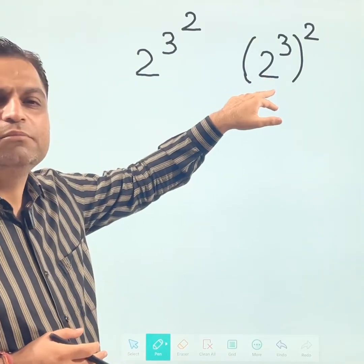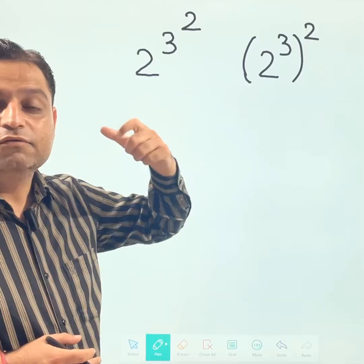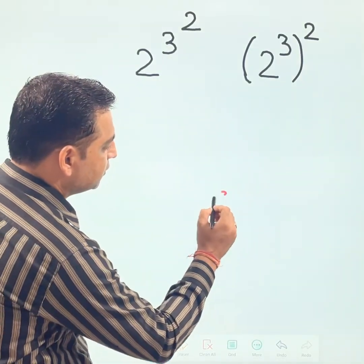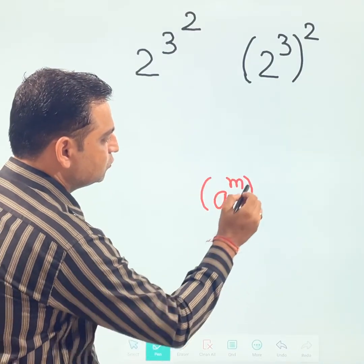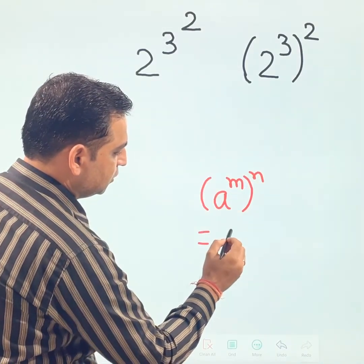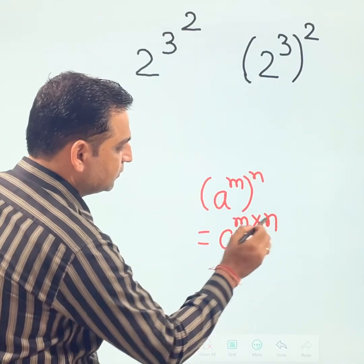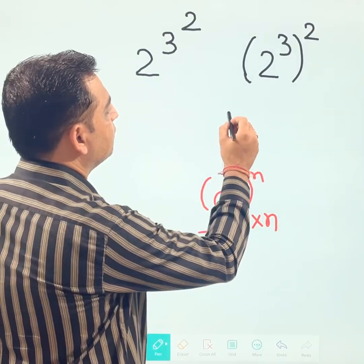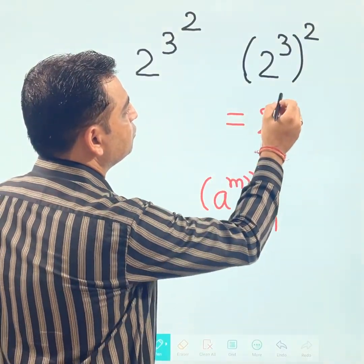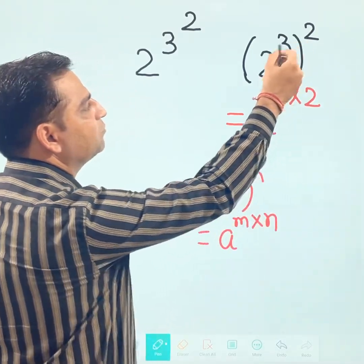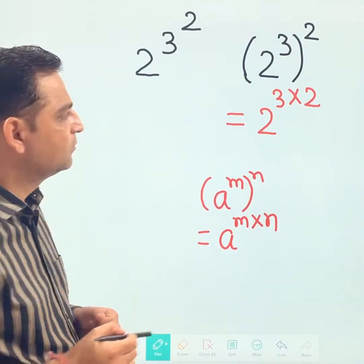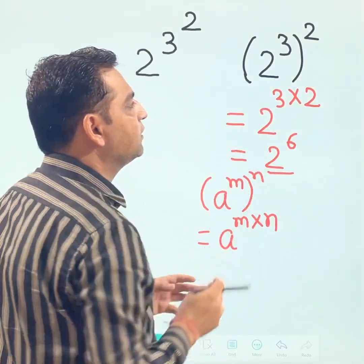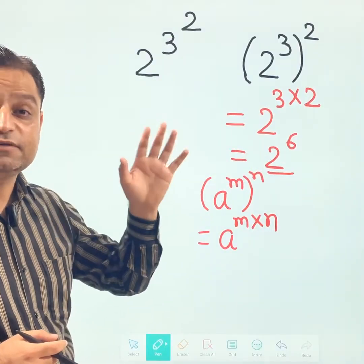When a bracket is there, this is very common — we have done the law of exponents. The law states: a to the power m to the power n equals a to the power m times n. So here, 2 to the power (3 squared) with brackets equals 2 to the power 3 times 2, meaning both exponents are multiplied, giving 2 to the power 6. This is the final answer, and most of you must be thinking the same way — which is correct.